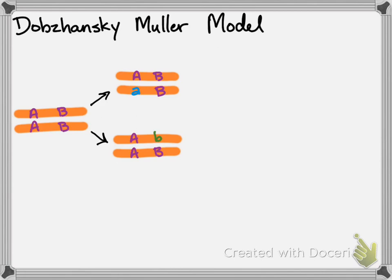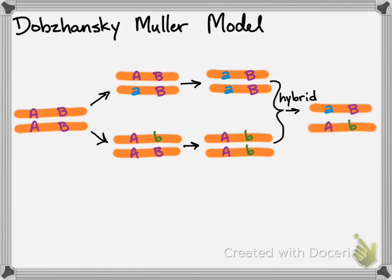Over time, those new alleles become fixed in the two different populations. When the two populations come back together, they make heterozygous hybrids.